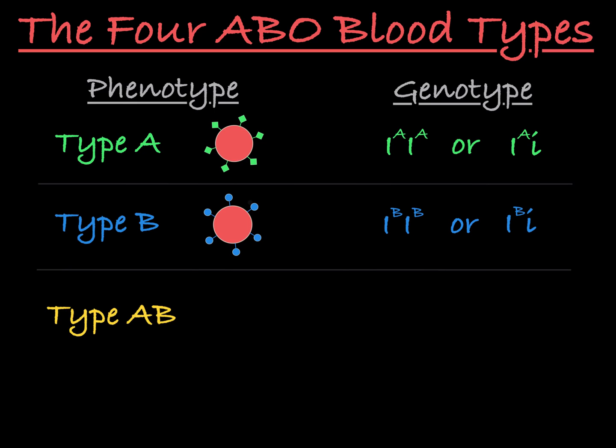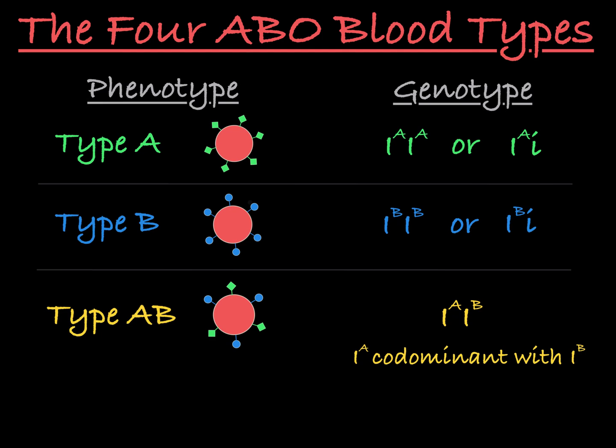Now let's shift our attention to type AB blood. This phenotype results from just one genotype, the heterozygote IAIB. The IA allele instructs the production of the enzyme that makes the type A antigen, and the IB allele instructs the production of the enzyme that makes the type B antigen. So the red blood cells of someone with the IAIB genotype produce type A and type B antigens, both displayed on the outside of the cell, creating type AB blood. These two alleles are considered to be co-dominant because they both show up separately in the phenotype.